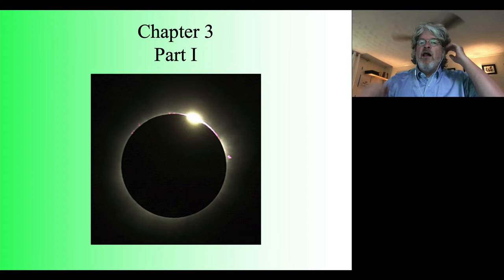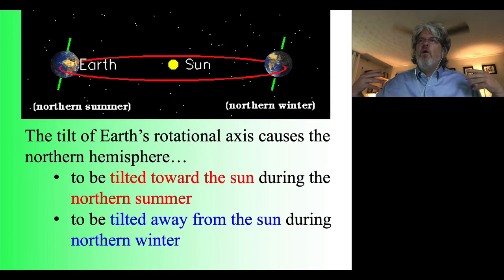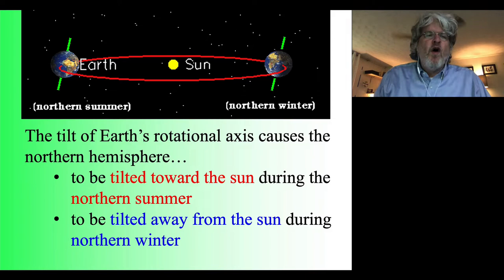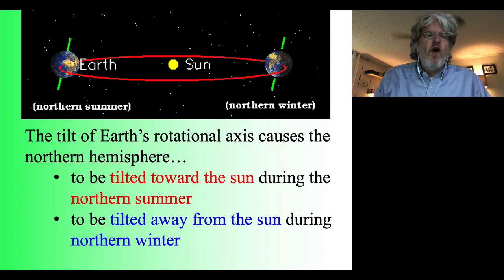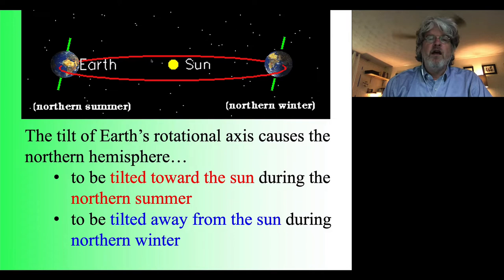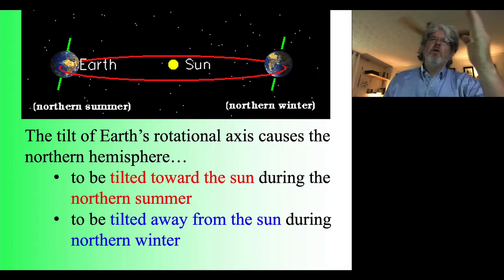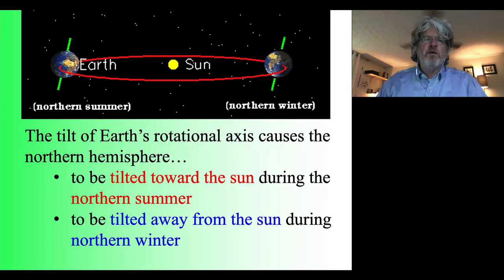That has consequences in terms of where the sun is going to appear on the celestial sphere at different times of the year, and it's going to affect how the sun appears relative to the celestial equator in our sky. In the northern summer, we're tilted 23.5 degrees towards the sun. Six months later, as we go around the orbit, the direction of our spin axis doesn't change, so the northern hemisphere is now tilted away from the sun.